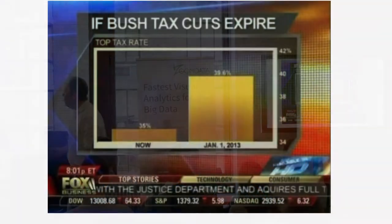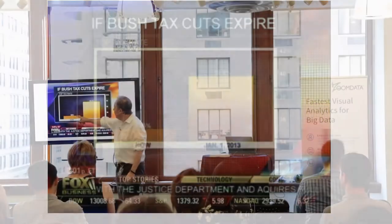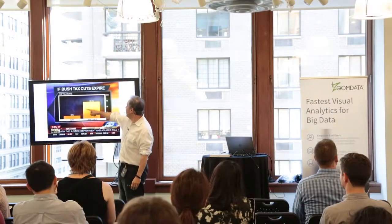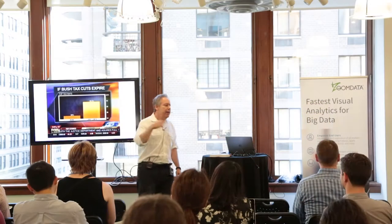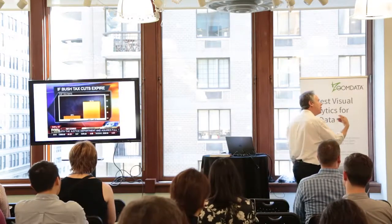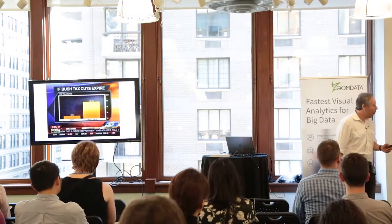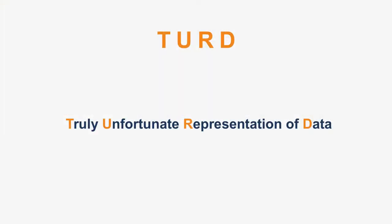Here's another one: if Bush tax cuts expire, they go all the way from 35% to — oh my God — this bar is five times as much, going up to 175%? No, it's going up to 39.6%. These are examples of what somebody — I wish I had come up with this — calls them TURDs: Truly Unfortunate Representations of Data.